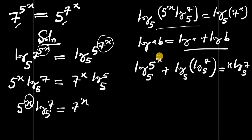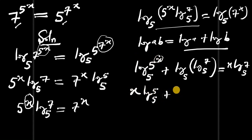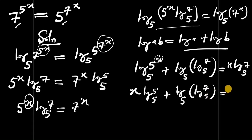Bringing down the exponents, x comes in front of the log, giving us: x · log_5(5) + log_5(log_5(7)) = x · log_5(7).